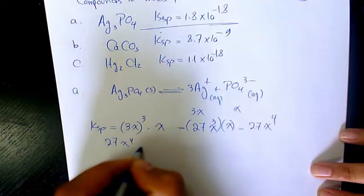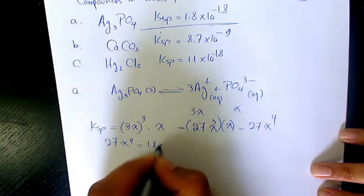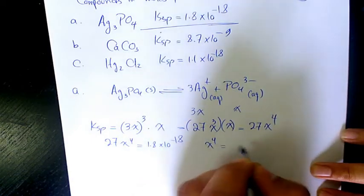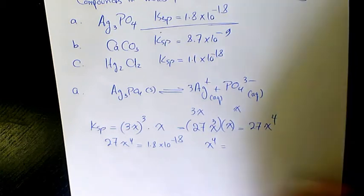So 27X to the power of 4 will be equal to the KSP, which is 1.8 times 10 to the power of negative 18. So X to the power of 4 is going to be 1.8 times 10 to the power of negative 18, divided by 27.